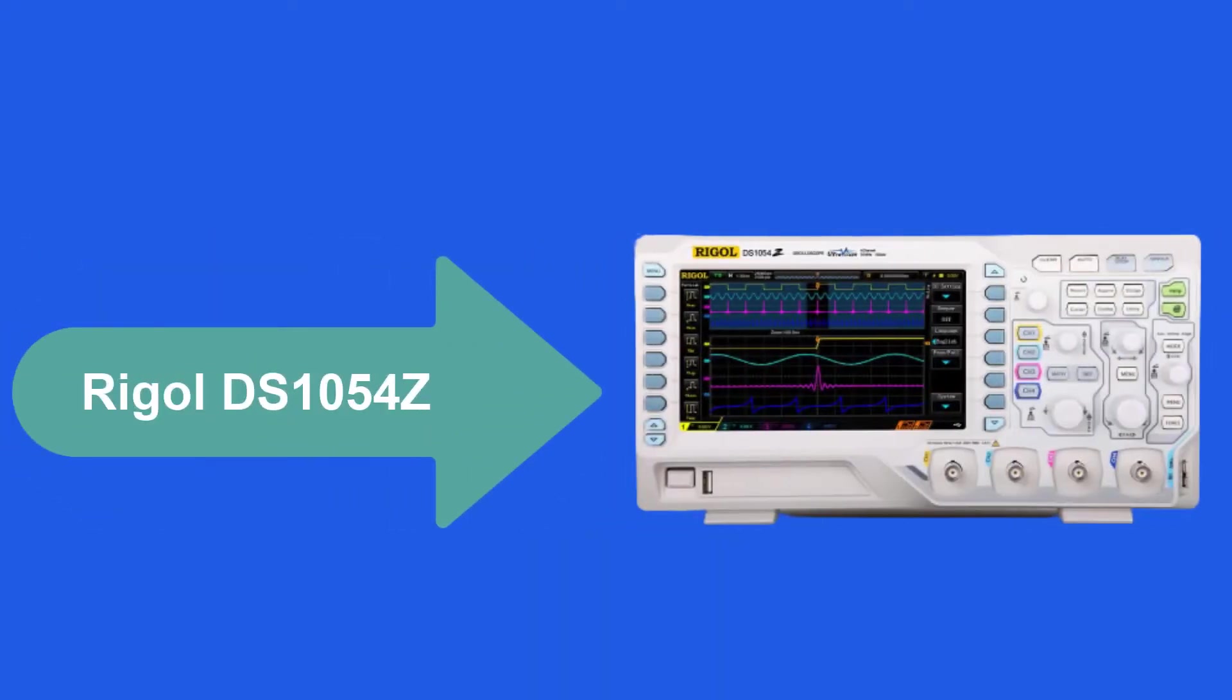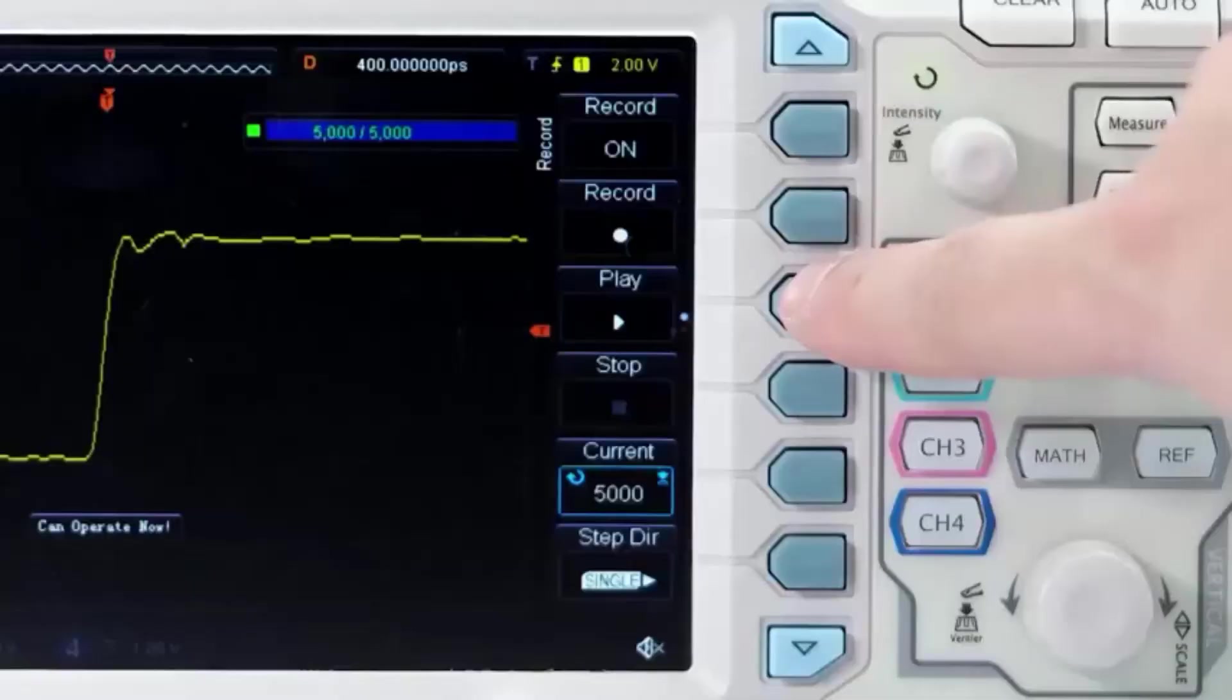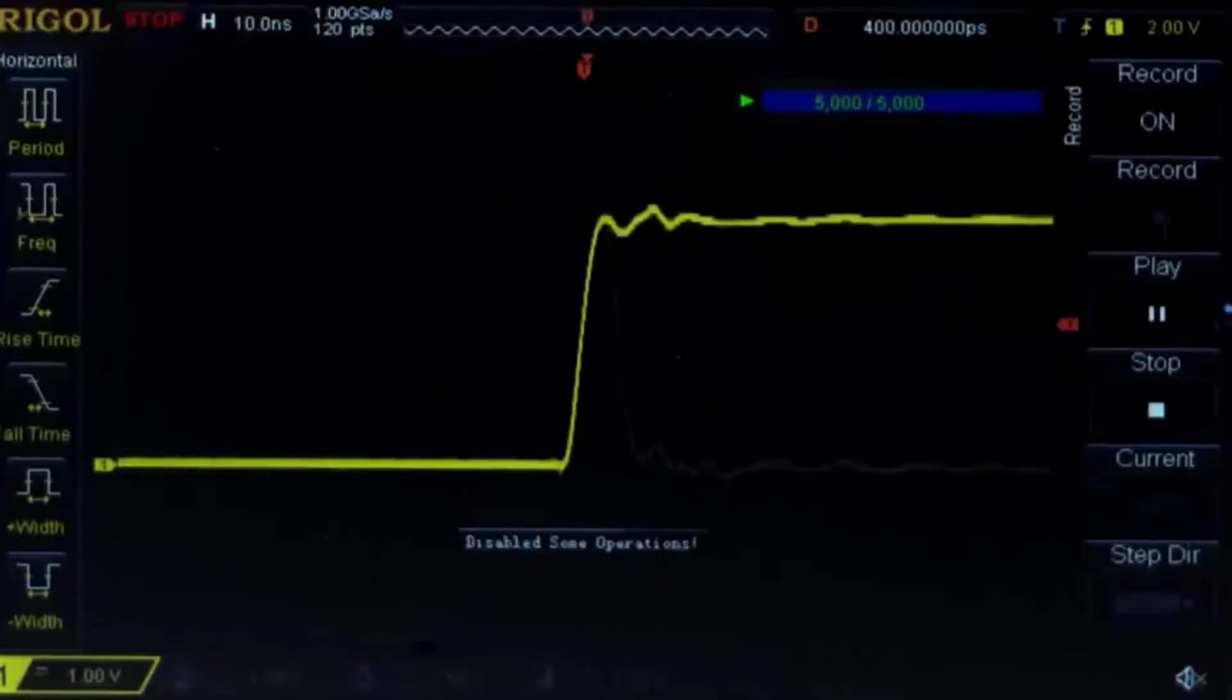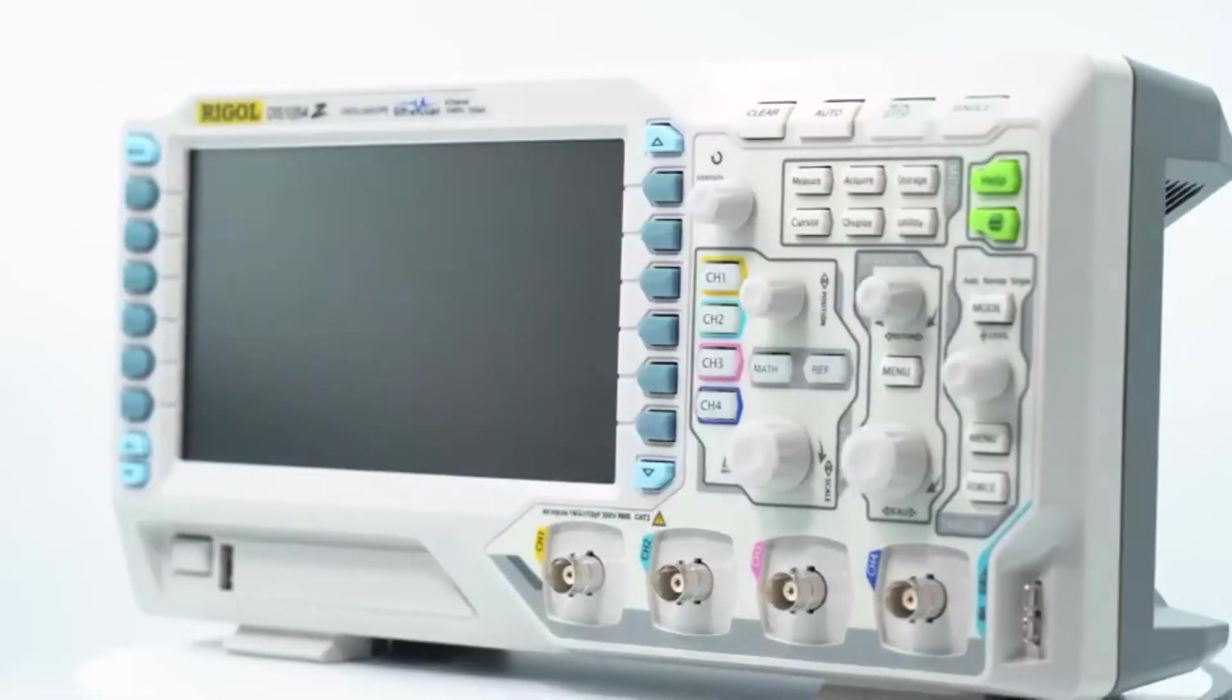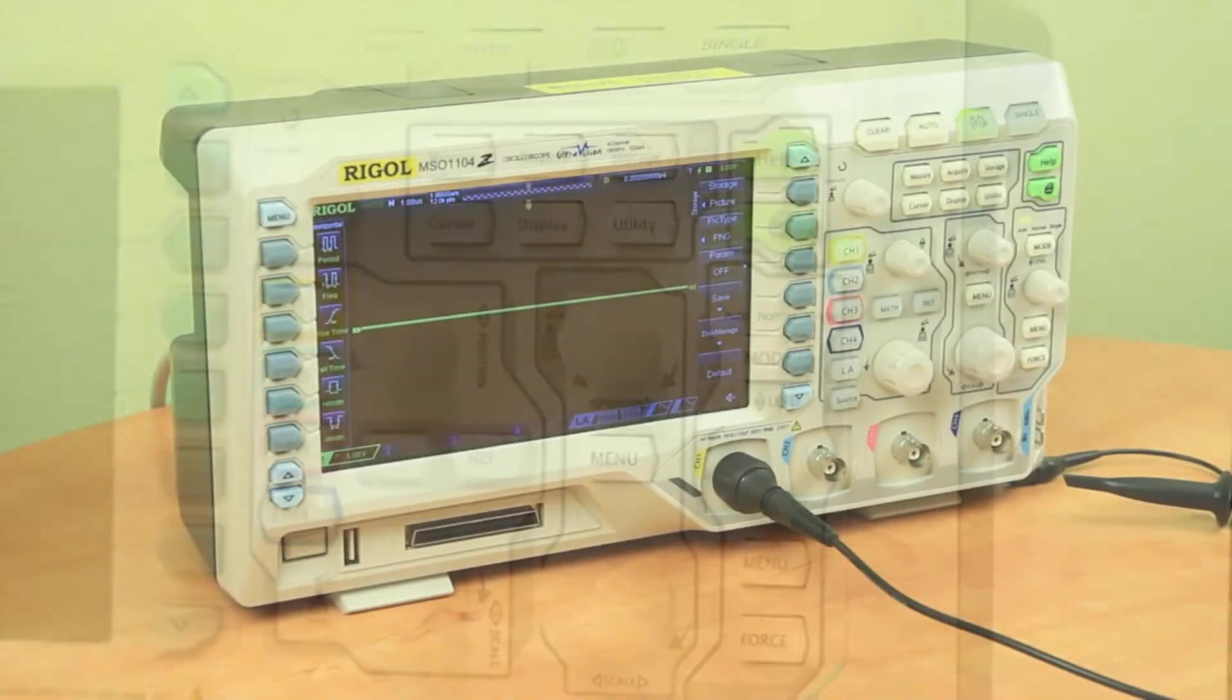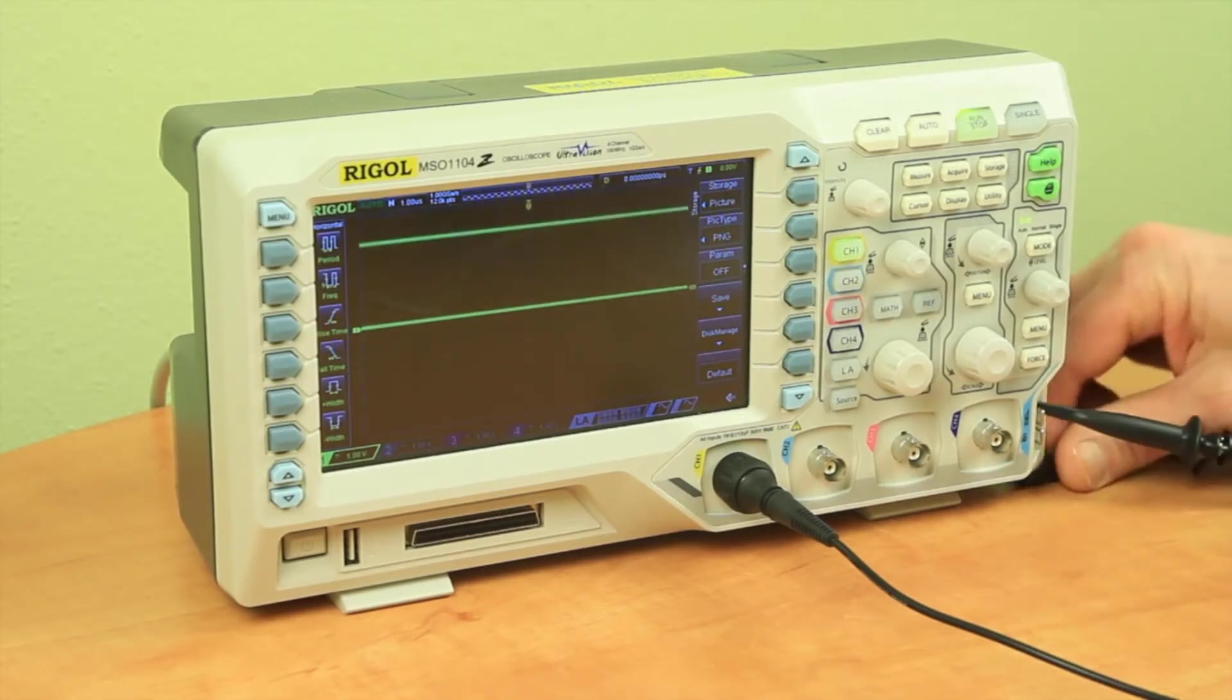At number 3, Riggle DS-1054Z. For many years, the Riggle DS-1054Z has been on the market, but it remains one of the most common 4-channel O-scopes. These 4 channels, the sampling rate of 1 gSPS for 1 channel, and the input bandwidth of 50 MHz are the most significant parameters of the model.